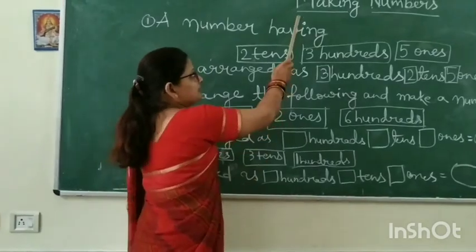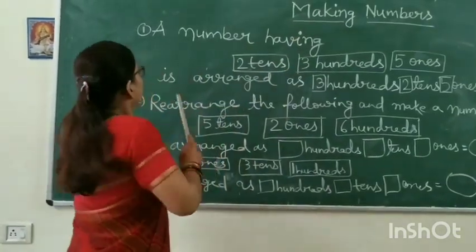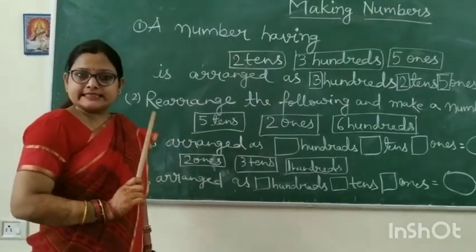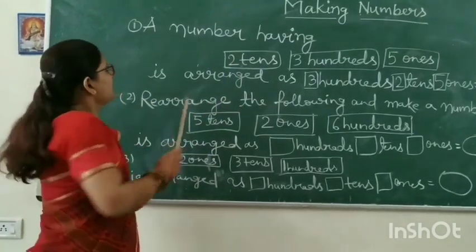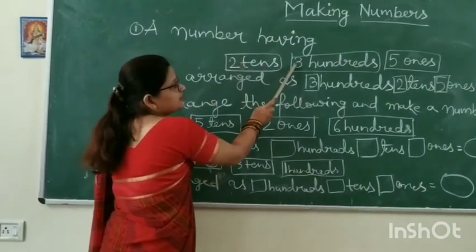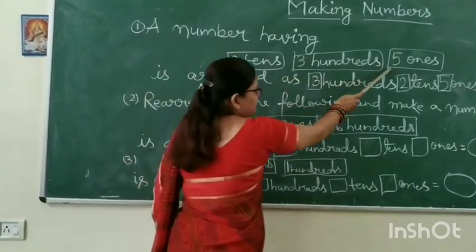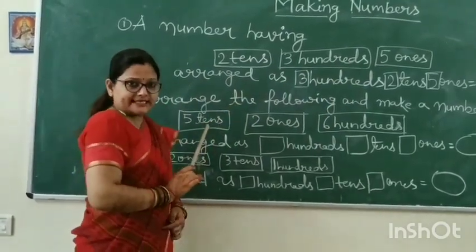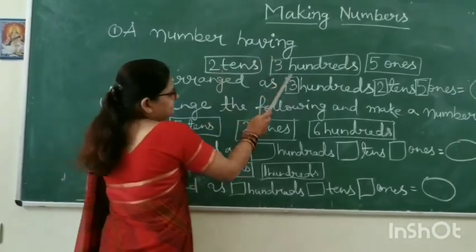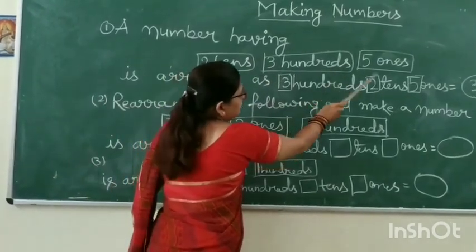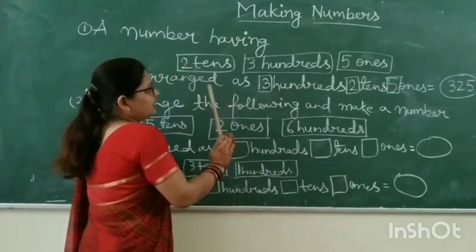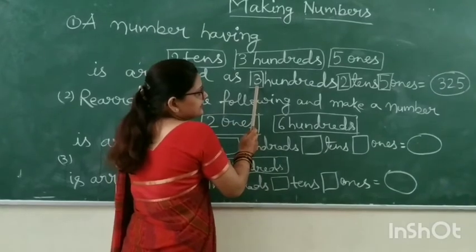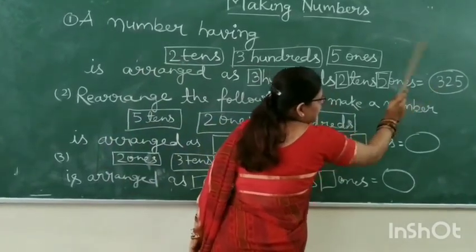A number having three digits has three places. A number having two tens, three hundreds, and five ones is arranged as follows. First we write hundreds: three hundreds. Then two tens and five ones. The order is hundreds, tens, and ones. The number will be 3, 2, 5 — that is, three hundred and twenty-five.